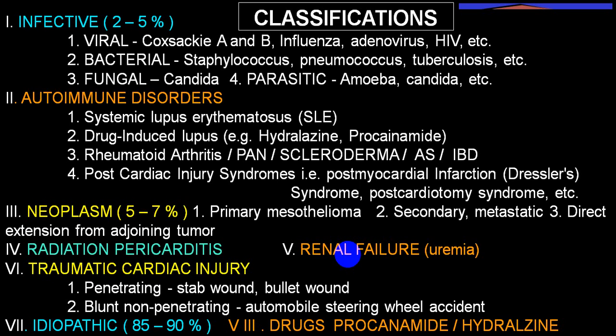In neoplasm, pericarditis can be primary, secondary metastasis, or spread from nearby organs. Radiation pericarditis is very frequent when the person is receiving radiotherapy for carcinoma of the breast or lung. Renal failure results in uremic pericarditis. Traumatic injury ends with hemopericardium, as in stab wounds, bullet injury, or blunt non-penetrating injury. In India, tuberculosis and HIV are quite common in infective pericarditis, especially in immunocompromised hosts.